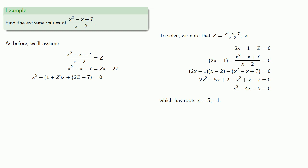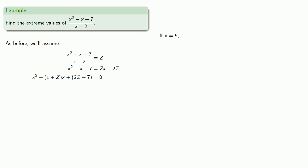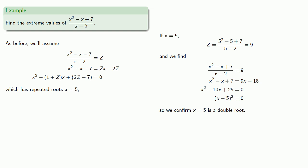And this gives us the candidates for our repeated roots. So let's think about that. If x is equal to 5, our z value is equal to 9, and we confirm that x equals 5 is a double root, and so this is going to correspond to one of our extreme values.